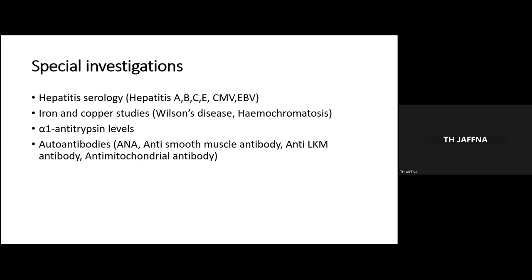Special investigations include hepatitis serologies. If abnormalities are found in liver function tests, we can proceed with hepatitis screening tests and iron and copper studies, which are used in Wilson's disease and hemochromatosis diagnosis. Alpha-1 antitrypsin levels and autoantibodies can detect autoimmune diseases of the liver: ANA, anti-smooth muscle antibody, anti-LKM antibody, and anti-mitochondrial antibody.